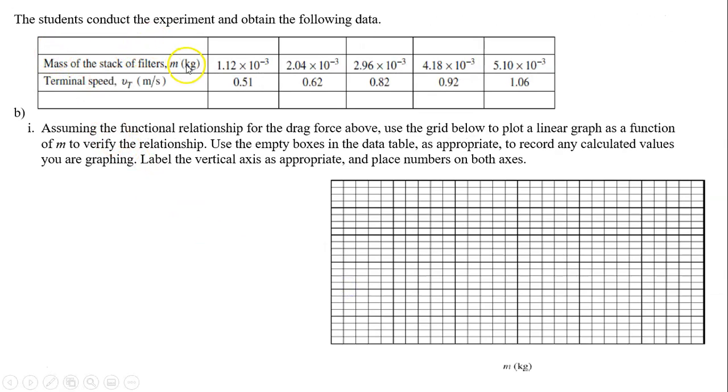The students conduct the experiment obtaining the following data. So you measure the mass and you measure terminal velocity. Assuming the functional relationship for the drag force above, use the grid below to plot a linear graph as a function of m to verify the relationship. Let's take a look at the relationship we derived: vt squared equals mg over c. From here, in order to graph a linear relationship, the vertical has to be vt squared.